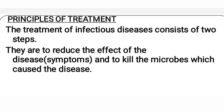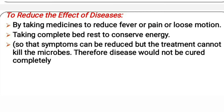Principles of treatment: the two ways to treat infectious diseases are to reduce the effect of the disease and to kill the cause of the disease. To reduce the effect, a particular treatment is provided so that symptoms can be reduced, but the treatment cannot kill the microbes — for example, taking medicines that bring down fever, reduce pain, or reduce loose motions, or taking complete rest to conserve energy.